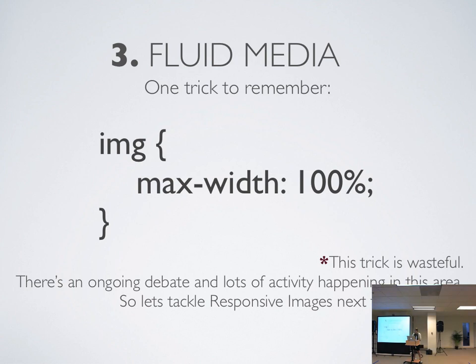There's only one trick to remember for responsive images: max-width is 100% on the image tag. You can just add that to your CSS and you'll get that effect where everything scales and takes up 100% of the width of its parent. But there's a caveat — this trick is kind of wasteful. You definitely don't want to load up a retina-size huge image for desktop and have that loaded to your friend on their edge network.